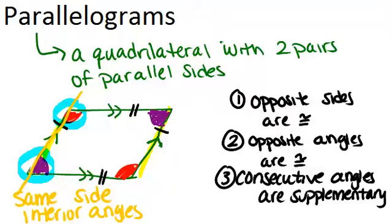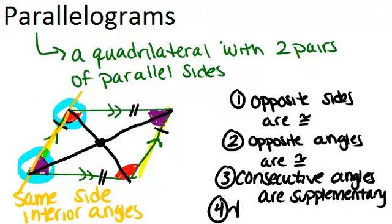The last important property about parallelograms has to do with their diagonals. So if we draw in the two diagonals, which are the lines that connect the opposite vertices, what you might notice is that these diagonals seem to intersect right in the middle. And they actually do. The way we say that is we say that the diagonals bisect each other.